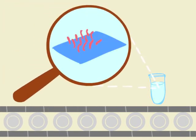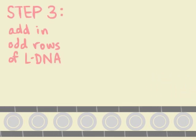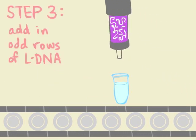At this point, we have formed our template with handles sticking out. These handles are designed to be on every other row of a predetermined area. We chose the center of a larger rectangular canvas. In the next step, we add in odd rows of L-DNA with a complementary handle. These connect to the handles that were sticking out from the template.